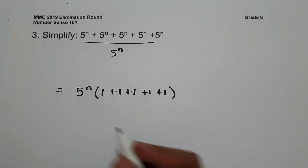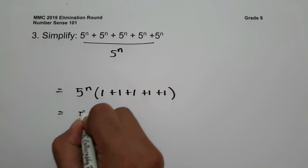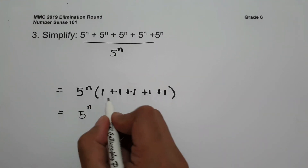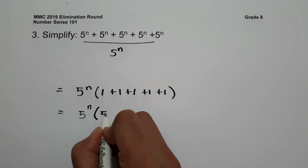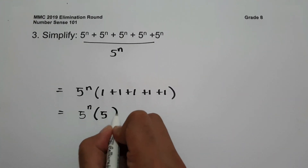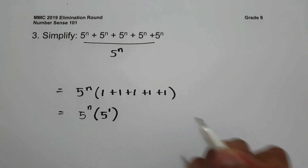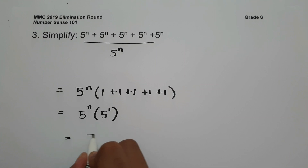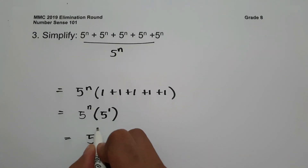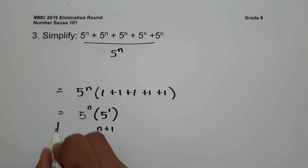To simplify, we have 5 raised to n times (1 + 1 + 1 + 1), which equals 5 raised to n times 4. Since 4 equals 5 raised to... we note the result. Combining same bases, the answer is 5 raised to n plus 1. This will be our answer.